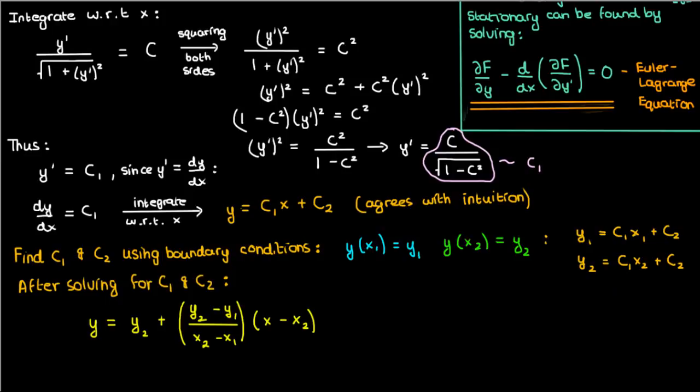So we've shown that a straight line is the function which makes the length functional stationary on a plane. But how do we prove that it makes the length functional minimum? How do we find the nature of the stationary function, this line?